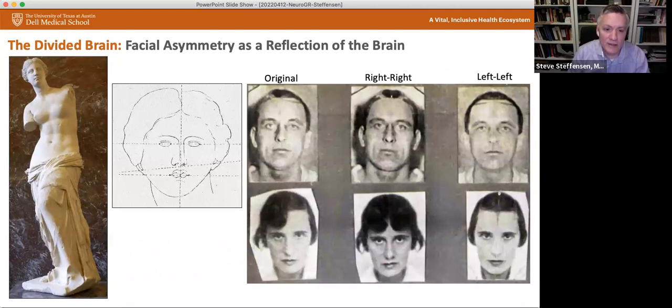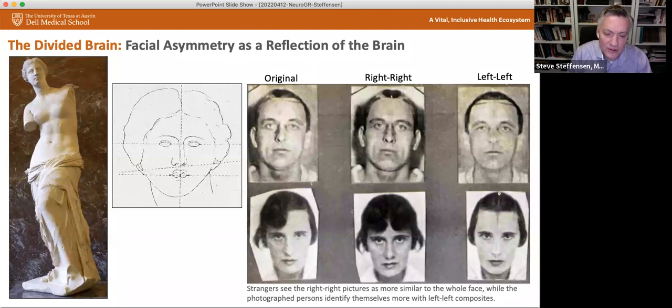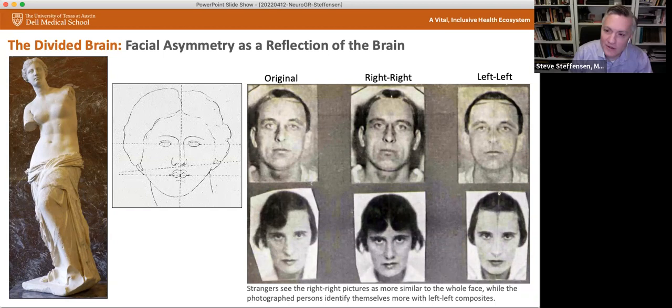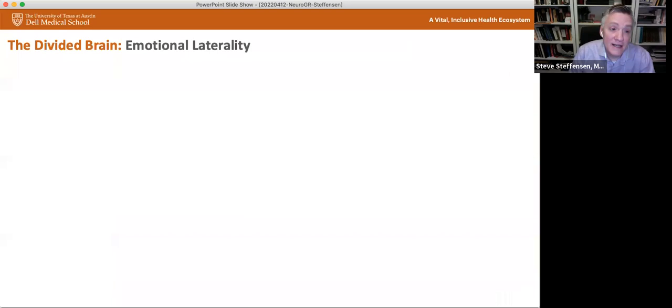And it was actually heavily criticized at the time. In fact saying, oh, maybe she had a limp even look at the way she's standing. But it was soon of course realized that actually all faces are asymmetric. And studies in the 1930s actually tried to illustrate this point a little bit by taking a photo, splitting it down the middle and creating composites of the right-right composite and a left-left composite, and then asking the people who they took the photo, which one do you think looks more like you and asking strangers who don't know the person, which one looks more like the original. And what's interesting is that strangers see the right-right pictures as more similar to the whole face as you probably do or might. Whereas the person who's photographed actually identify themselves more with the left-left composite.